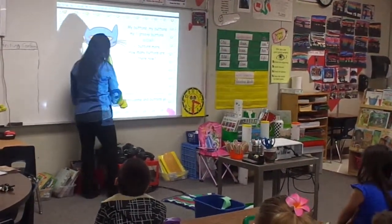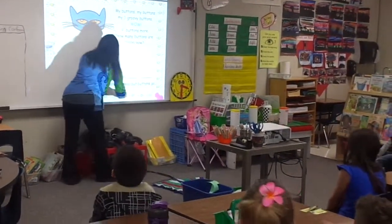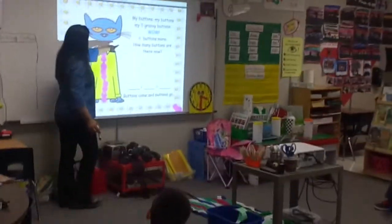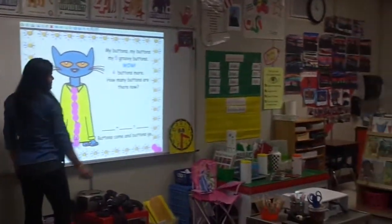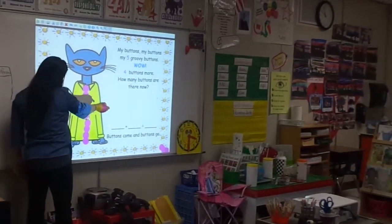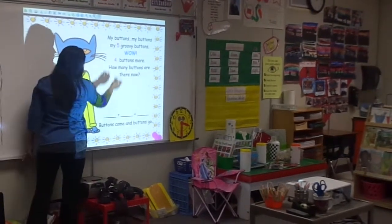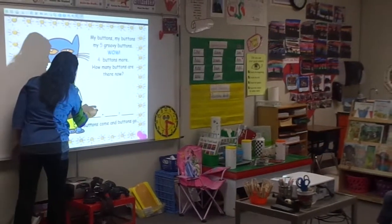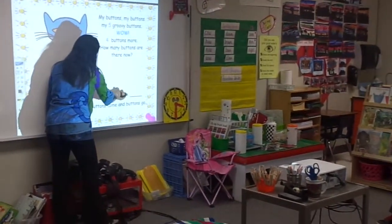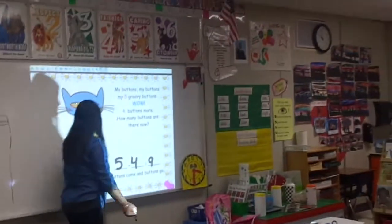Four more buttons. So that means — then he counted nine. Together we can say four buttons more. So how many buttons are there? We count it: one, two, three, four, five, six, seven, eight, nine. Also, we can do it this way too. Five groovy buttons. So five, and what sign is this? Addition. So plus four buttons — five plus four equals nine. Four buttons. Five plus four equals nine. Nine. There you go.